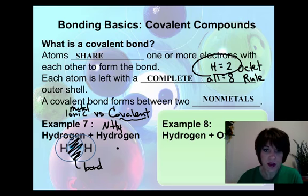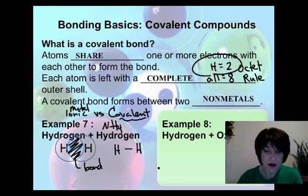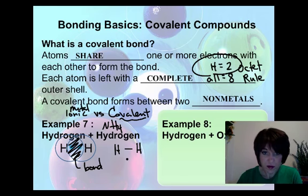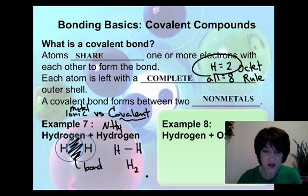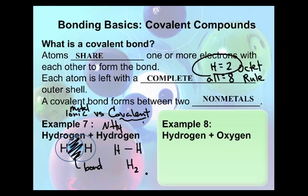If we're sharing one pair of electrons, then the bond is designated with a single line, because it's sharing a single pair of electrons. Then we would write the formula for this molecule just like this: H₂, to indicate that there are two hydrogens in this molecule. So a covalent compound tells us exactly how many atoms of each kind make up a single unit called a molecule.